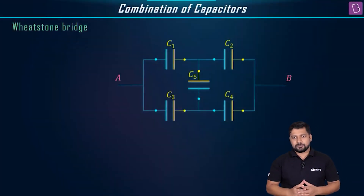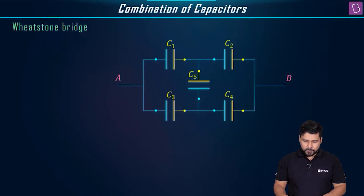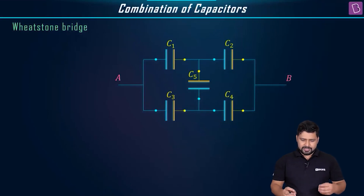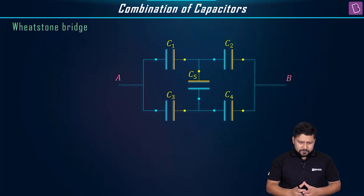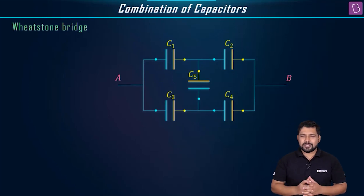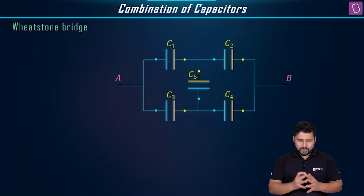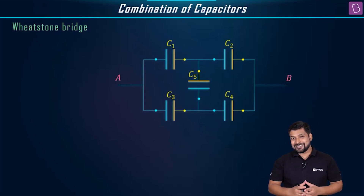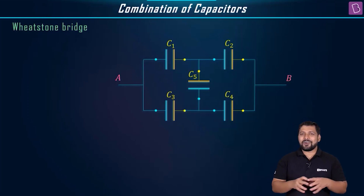The Wheatstone bridge type question. To talk about the Wheatstone bridge, a circuit like this is what is called a Wheatstone bridge. Named after a scientist. We just want to know that in this particular circuit, if I ask you what is the value of equivalent capacitance between A and B, probably you'll get something stuck. The reason is that this circuit is complex.